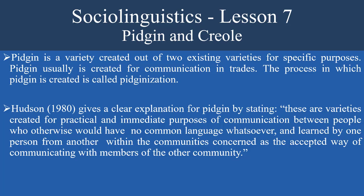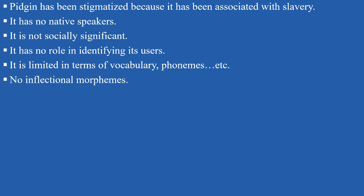Pidgin has been stigmatized because it has been associated with slavery. Pidgin was mostly created for communication in trade, and here we're talking mostly about slavery. It has no native speakers — people learn only certain words to communicate, but it's not acquired as a first language.